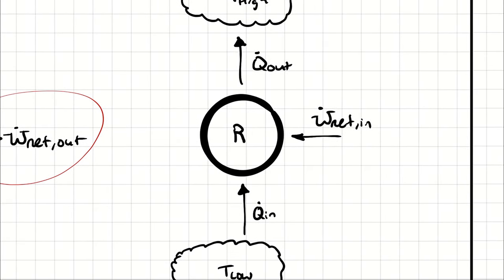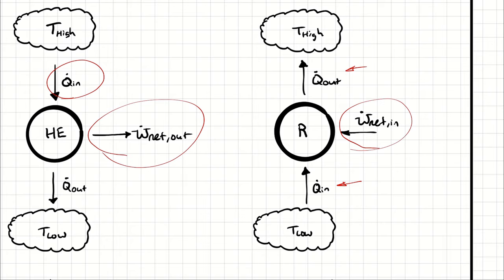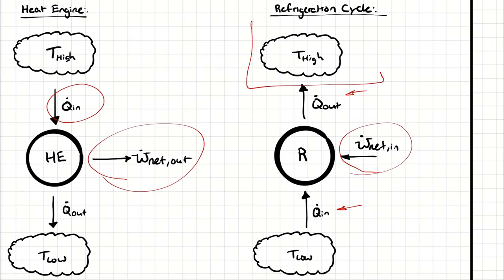In a refrigeration cycle, what we're putting in to operate our cycle is net work. And the desired effect can either be heat transfer in or heat transfer out. If you're trying to refrigerate a space, you orient your refrigeration cycle so it's pulling heat out of the space you're trying to cool. But you can also use a refrigeration cycle as a heat pump — you can push heat into a desired space and heat it. Because of that, we have two different ways of keeping track of the performance of our refrigeration cycle.